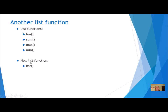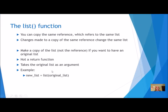The new function we're going to talk about today is called list, and it makes a copy of your list. If you just make a copy of the variable, which is a reference, it refers to the same list. Changes made to the copy with the same reference change the same list. But if you make a copy of the list instead of a copy of the reference, then you have two completely different lists. They start out the same with the same values, but they are two different lists instead of referring to the same list.